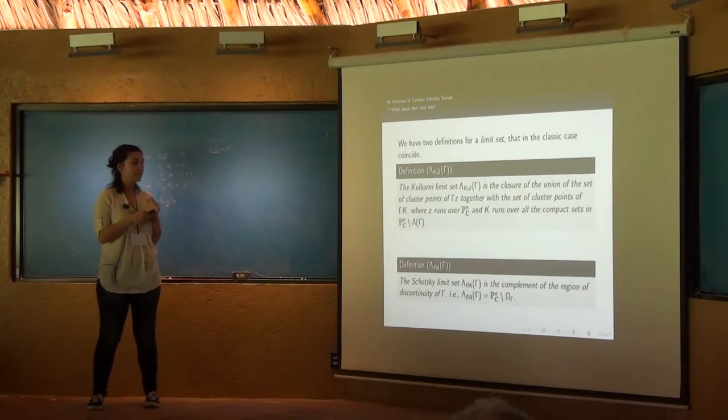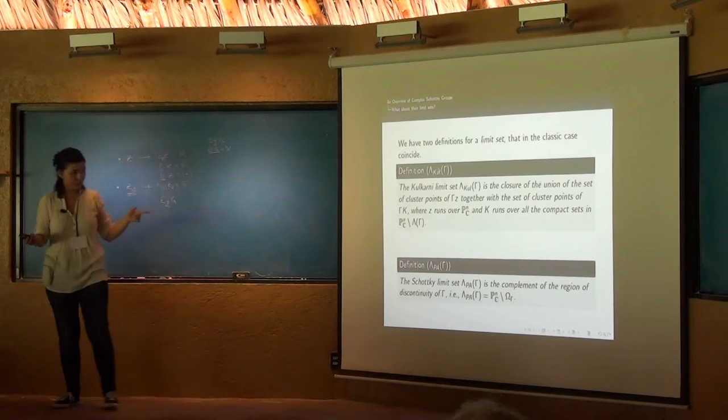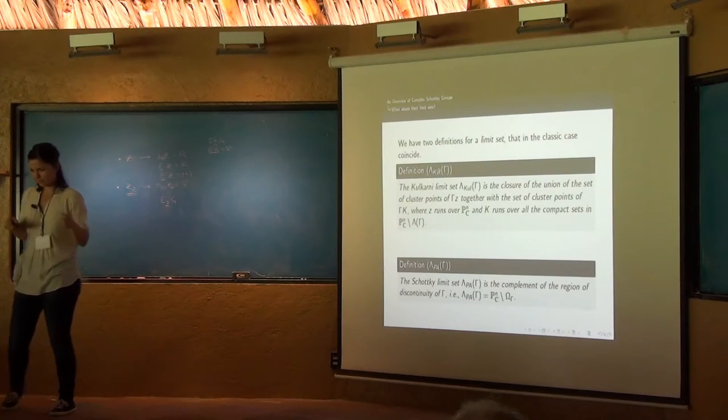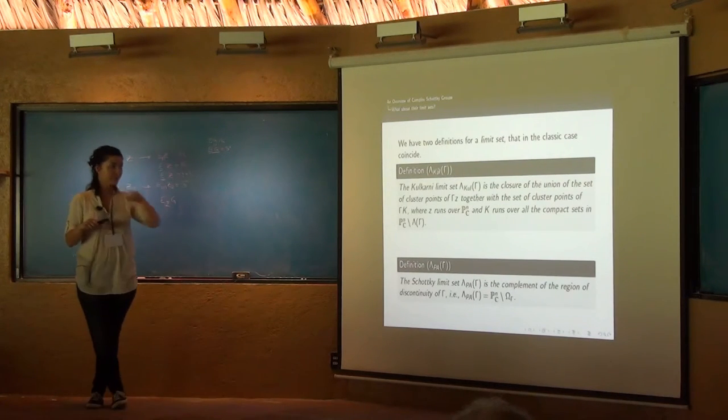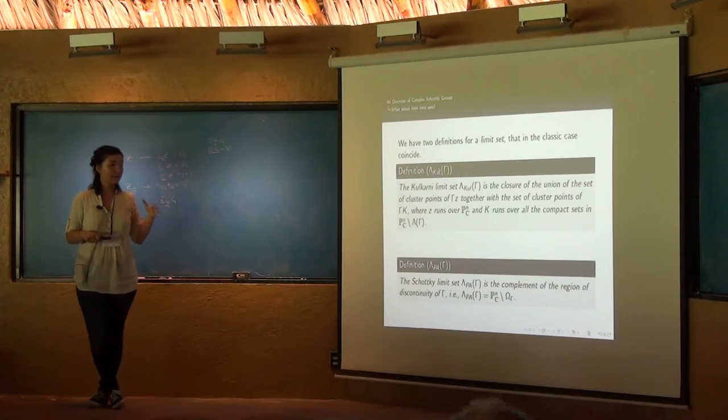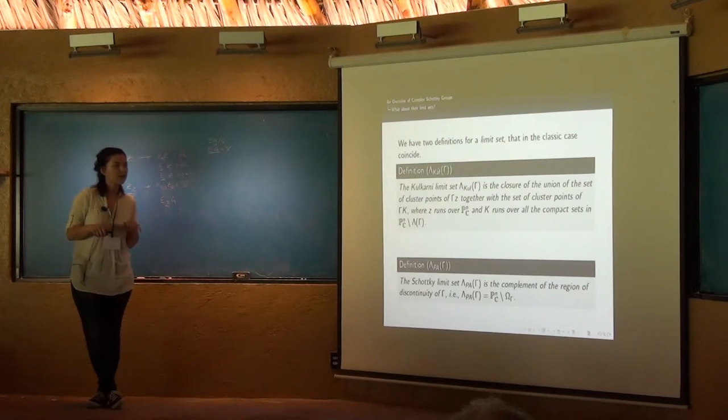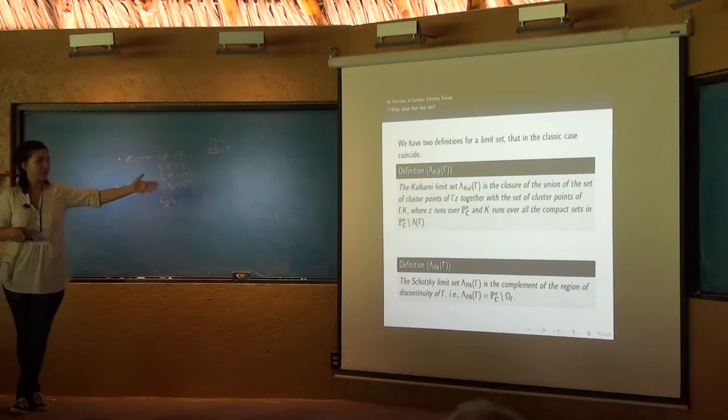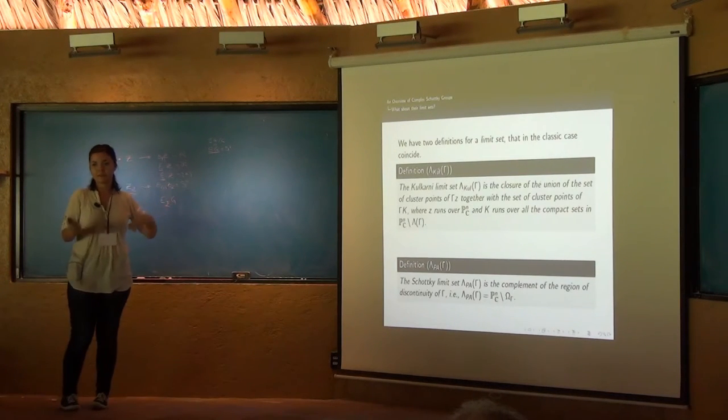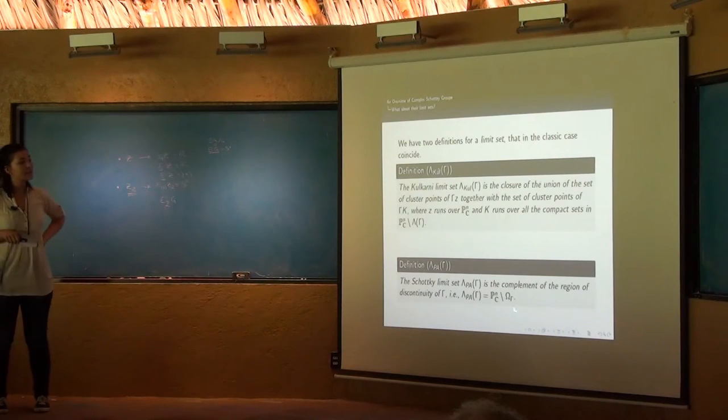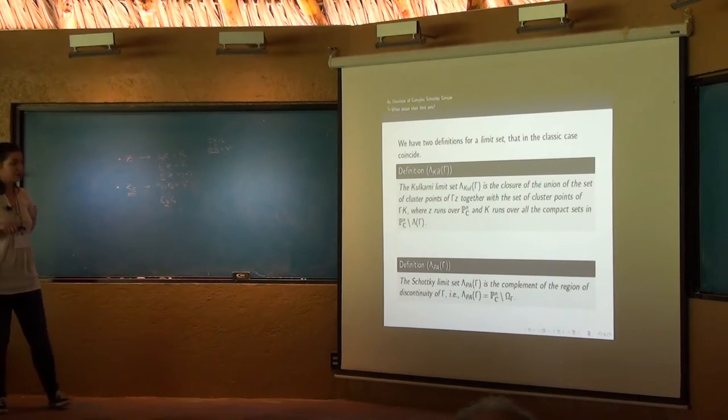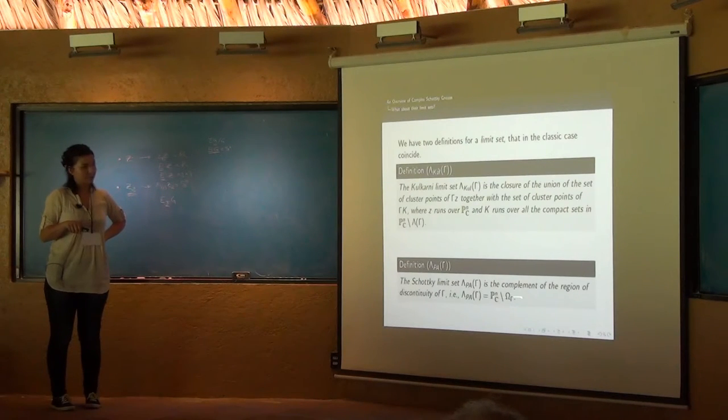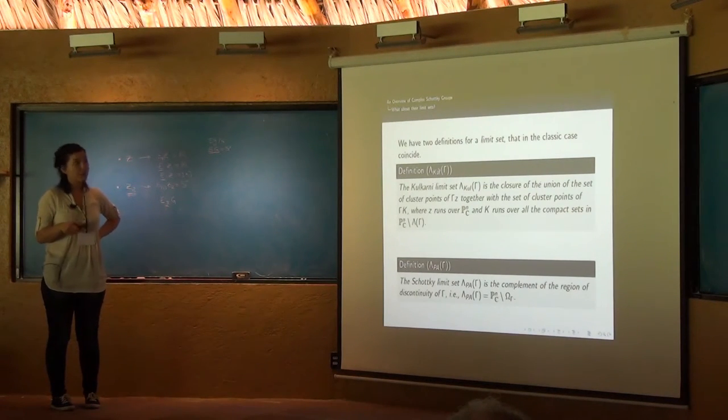The second definition that we have is a definition from the paper of 2008. So the Kulkarni limit set, that we call lambda_PA, this is because Pepe and Alberto, it doesn't have anything to see with Kulkarni limit, but just with Pepe and Alberto, is the complement of the region of discontinuity of gamma. So in the classic case, both of them coincide.